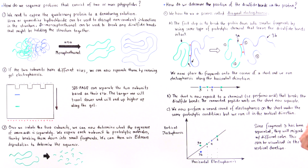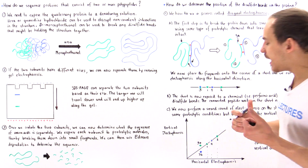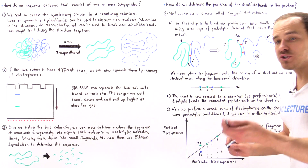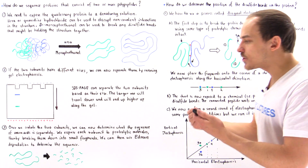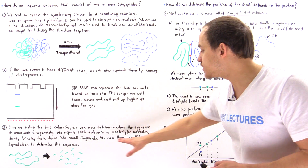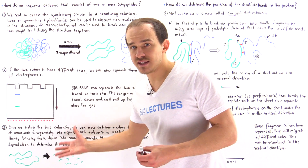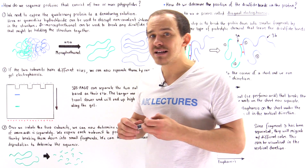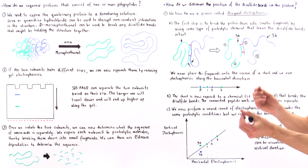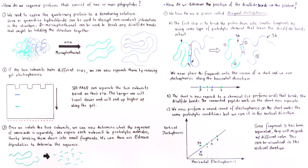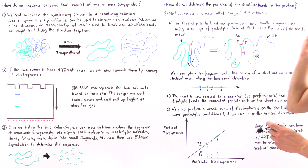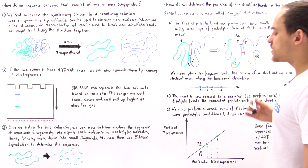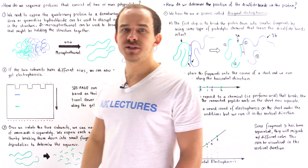Now we know that there exist disulfide bonds between fragments 3A and 3B. Once we know that, we can cleave them further and determine the sequence using the Edman degradation process. Once we know the sequence and where those cysteine amino acids are, we can determine how these cysteine amino acids are actually connected. This is how we determine the position of our disulfide bonds by running this special procedure known as diagonal electrophoresis.